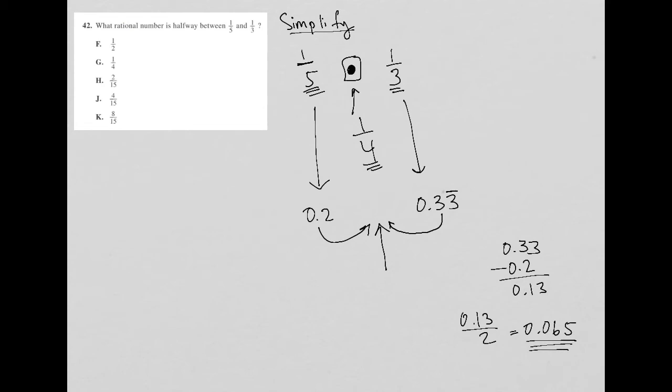So what I get here as a middle value is 0.265. If you wanted to check, you could also say, what's 0.33 minus 0.065, and you should get the exact same value. So 0.265 is the middle value.